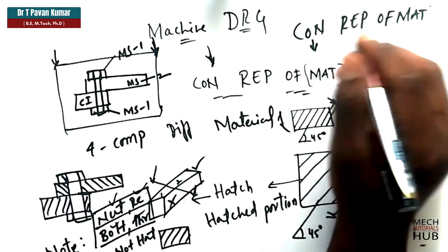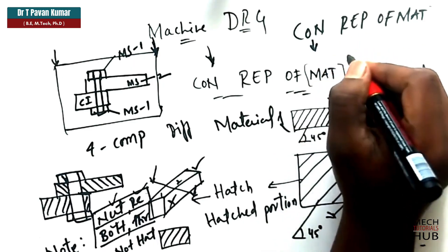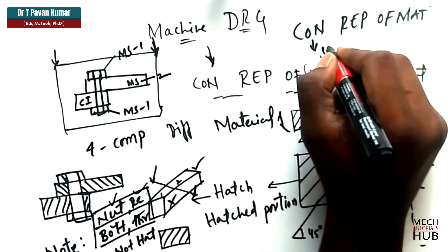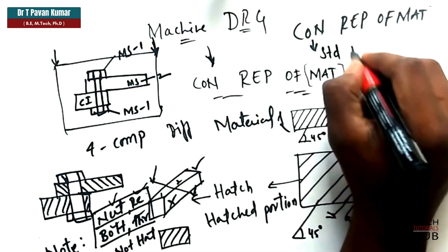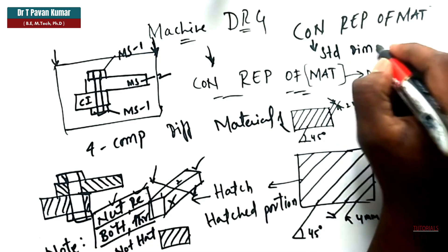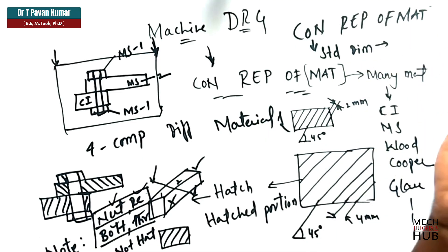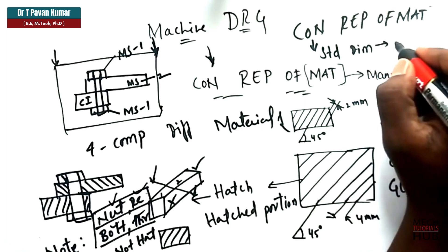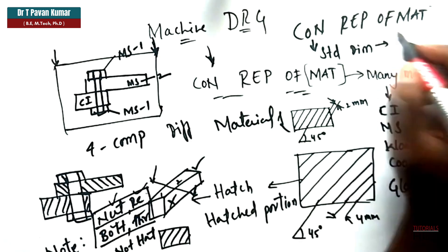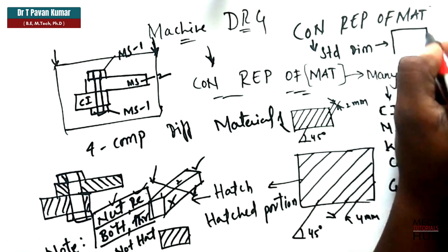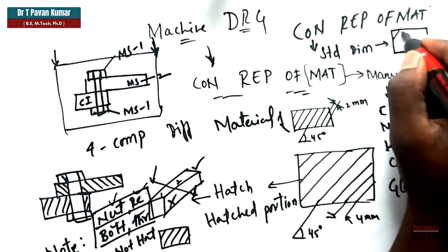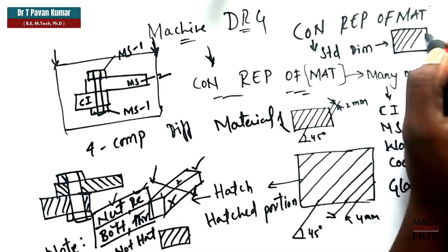we need to hatch saying that the component has been sectioned. And it all depends on the material also. The component which you are going to cut, whether it is made of mild steel or wood or glass, that we need to represent with the help of conventional representation of material. What does this indicate? Conventional means we don't consider dimensions. Standard dimensions what you call. We don't consider any standard dimensions.